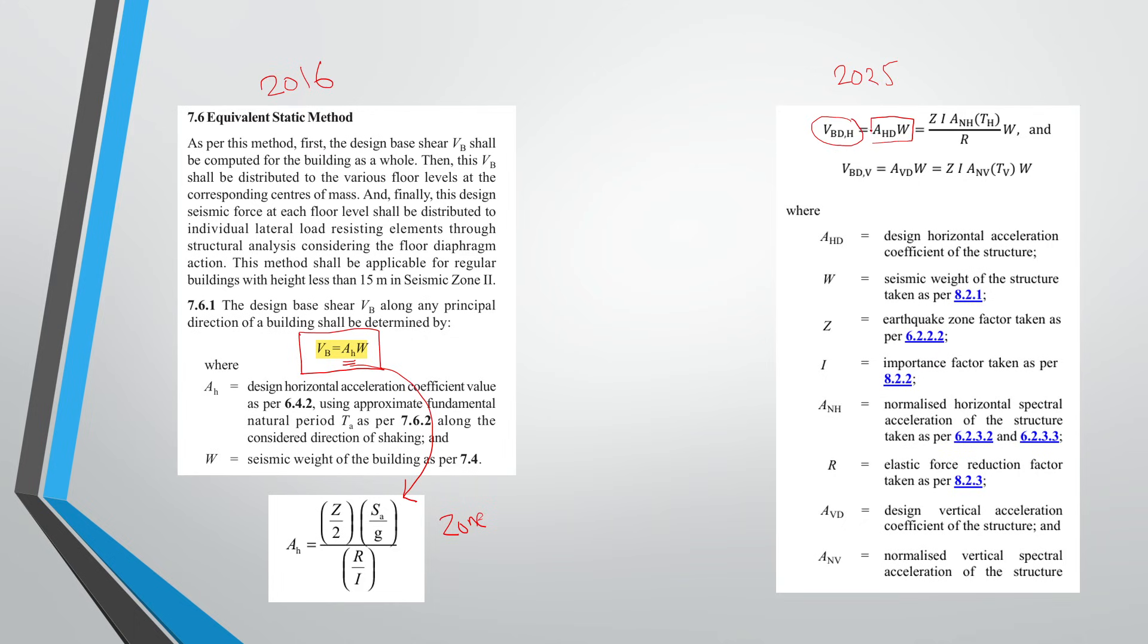So D is for design base shear, equals AHD into W. This AHD means previously it was AH, now it has become AHD, that is design horizontal acceleration coefficient of the structure. And this is the formula for AHD: ZI ANH TH upon R.